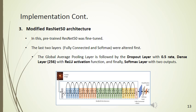The last architecture is ResNet-50. In this experiment, a pre-trained ResNet-50 was fine-tuned. As the modification, the global average pooling layer is followed by a dropout layer with 0.5 rate, a dense layer with ReLU activation function, and finally a softmax layer with two outputs.